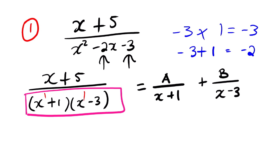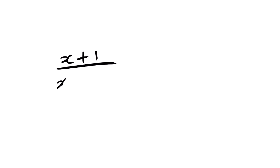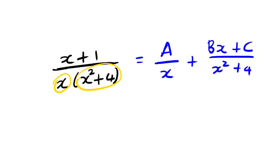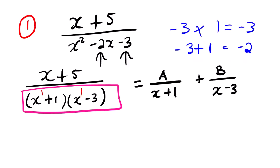We will also look at an example where we have a quadratic expression in the denominator. Suppose you have a factor that is linear and a second factor that is quadratic. In that case, we write it as A over (x) plus (Bx + C) over (x² + 4). So when dealing with a quadratic expression, we express the numerator as Bx + C — it goes with a constant.